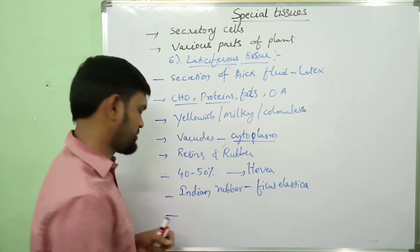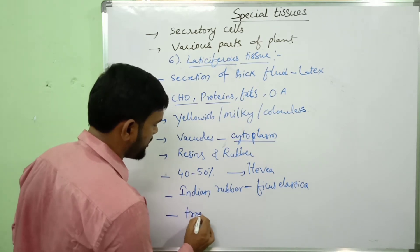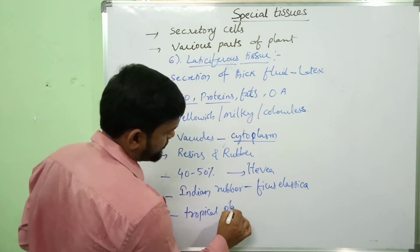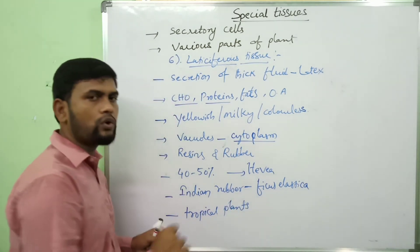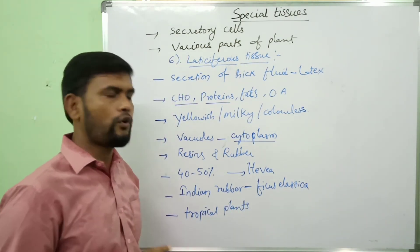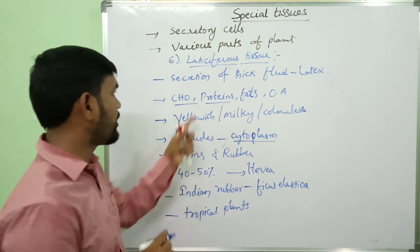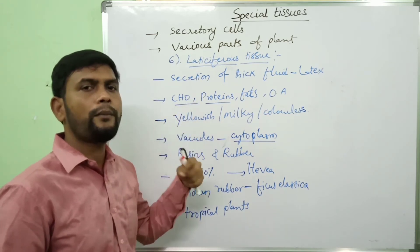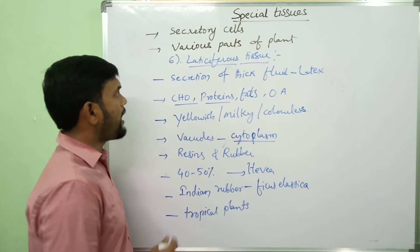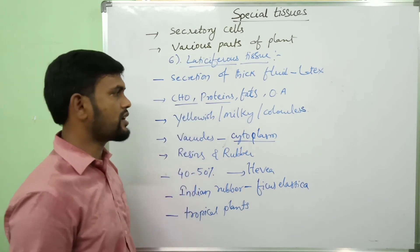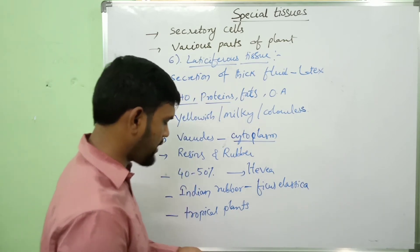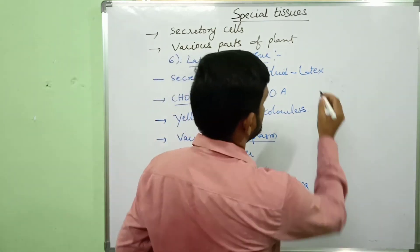Laticiferous tissues are distributed in tropical plants. They are present throughout the plant body and are mainly associated with phloem. Laticiferous tissues are classified into two types: latex cells and latex vessels.